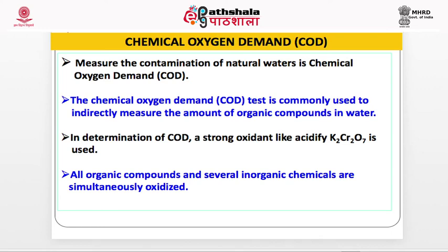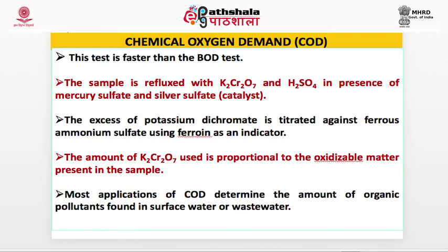Now, chemical oxygen demand, or COD. COD is used to measure contamination of natural water. The COD test is commonly used to indirectly measure the amount of organic compounds in water. A strong oxidant like acidified potassium dichromate is used. All organic compounds and several inorganic chemicals are simultaneously oxidized. This test is faster than the BOD test. The sample is refluxed with K2Cr2O7 and H2SO4 in the presence of mercury sulfate and silver sulfate as catalysts. The excess potassium dichromate is titrated against ferrous ammonium sulfate using ferroin as an indicator. The amount of K2Cr2O7 used is proportional to the oxidizable matter present. Most applications of COD determine organic pollutants in surface water or wastewater.